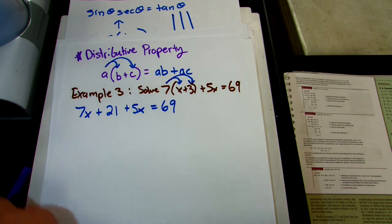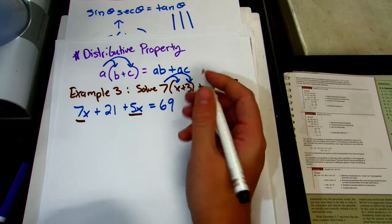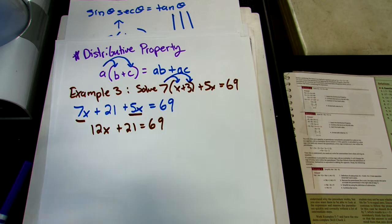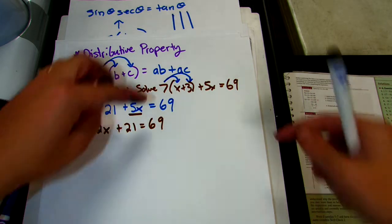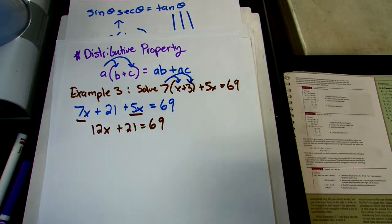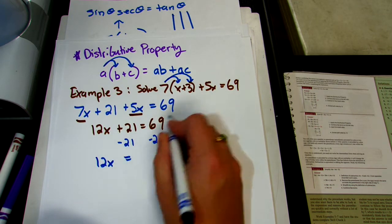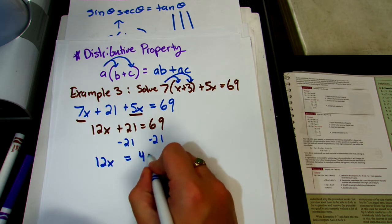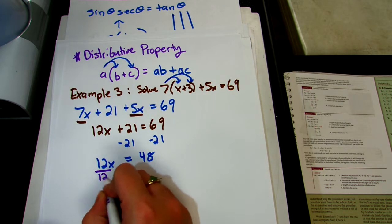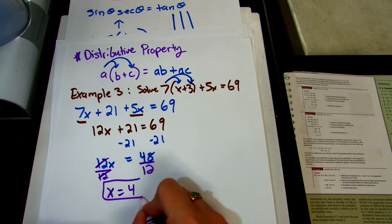Now we can combine like terms. Looking on the left side, the only two like terms are 7x and 5x. So 7x plus 5x gives us 12x plus 21 equals 69 — a two-step equation. We take care of addition and subtraction first, subtracting 21 from both sides. 69 minus 21 is 48. Then we take care of the multiplication by dividing both sides by 12. 48 divided by 12 is 4. That is our answer.